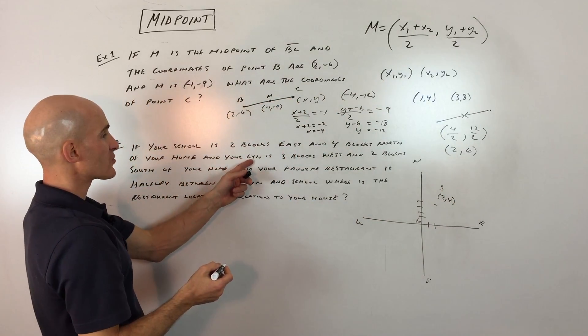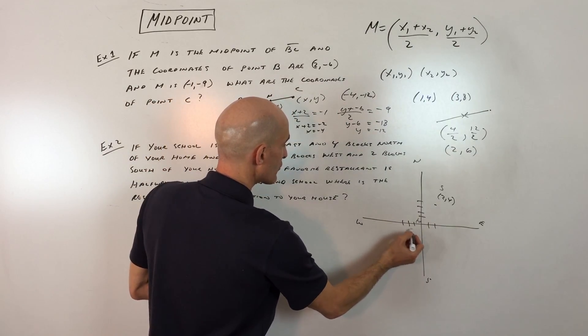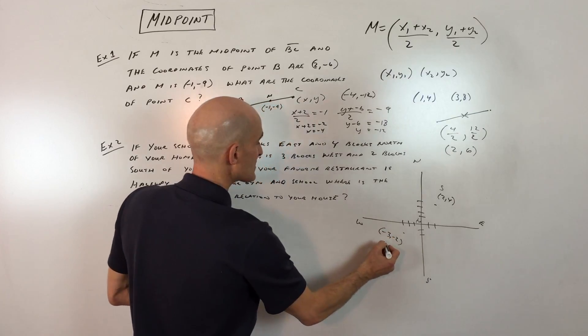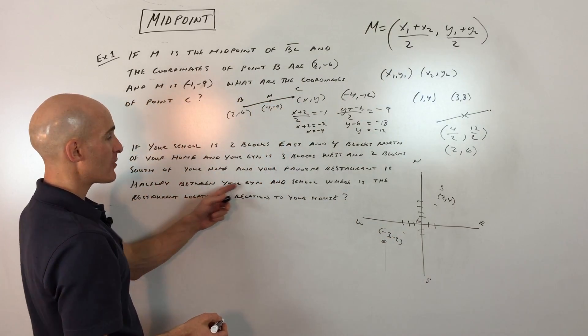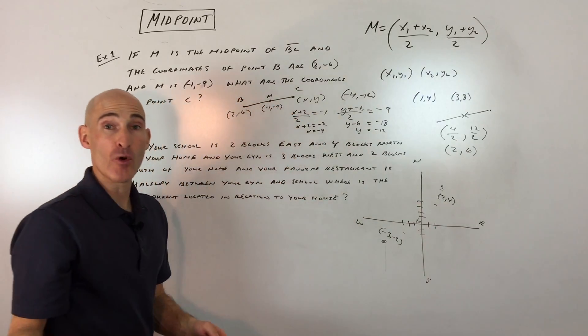And then your gym is 3 blocks west and 2 blocks south. So 1, 2, 3, and 2 south. That's negative 3, negative 2. That's the gym. And your favorite restaurant is halfway between the gym and the school. We're basically looking for the midpoint.